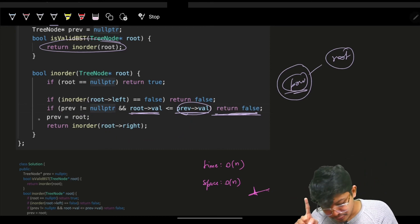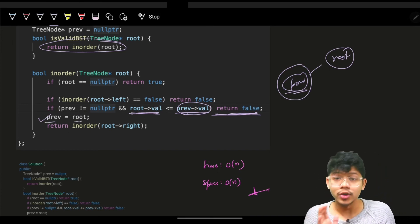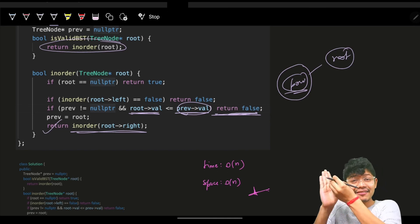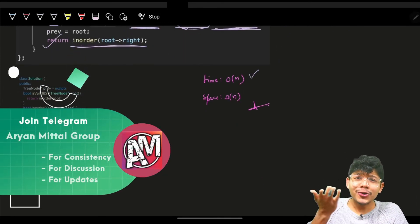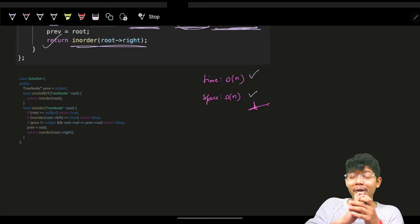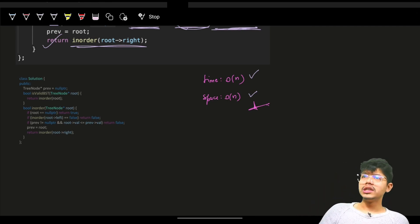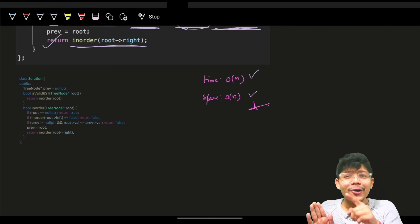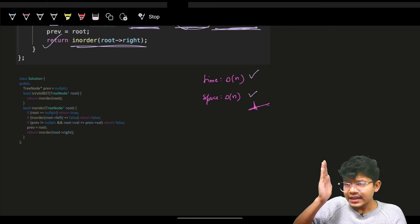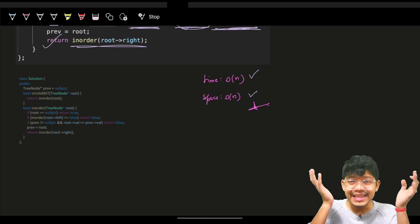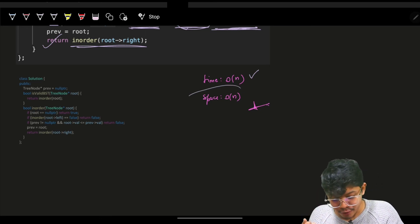Time is O(n) as we traverse all nodes. But space is still O(n) because of the recursive stack. Even if we use an iterative method, we'd still need an explicit stack. Recursion uses a recursive stack; iteration uses an actual stack or vector — both need O(n) space. What we actually optimized is going from O(2n) down to O(n) by avoiding the extra vector.